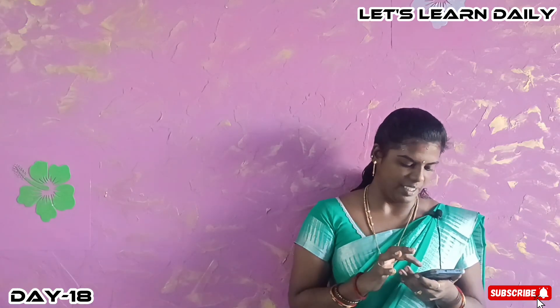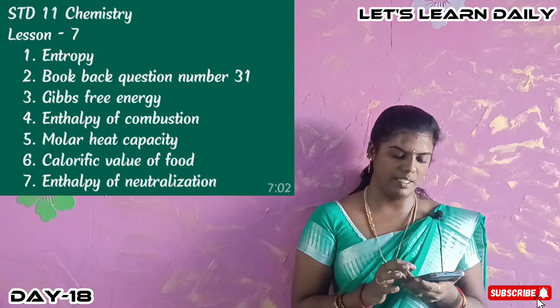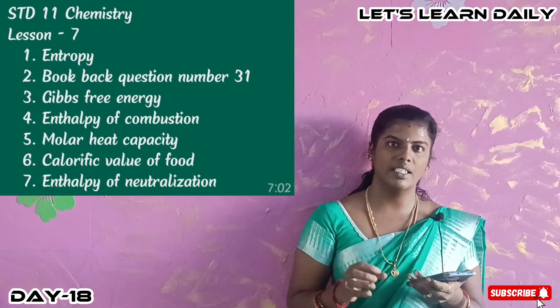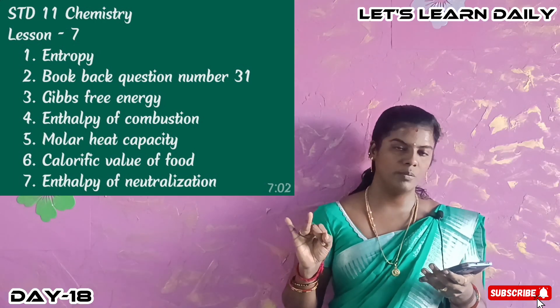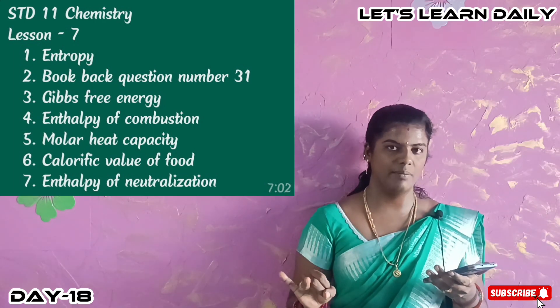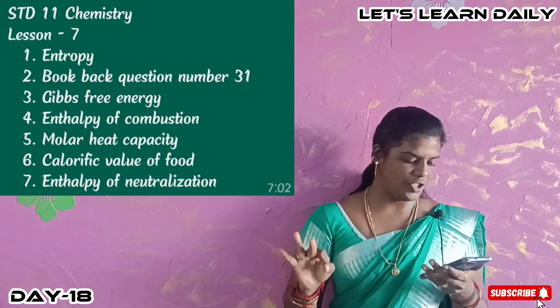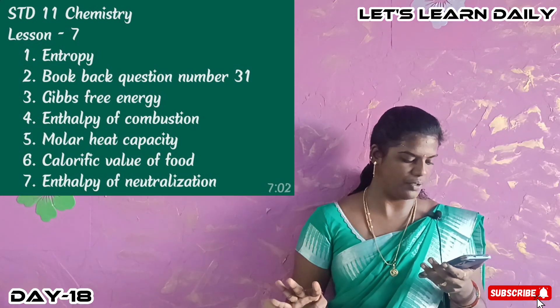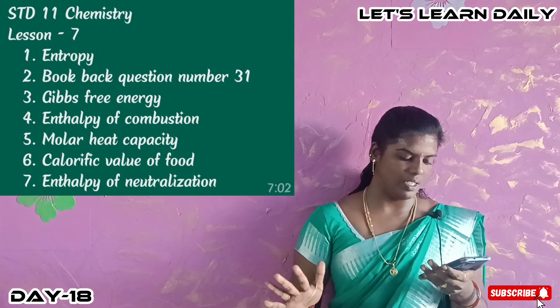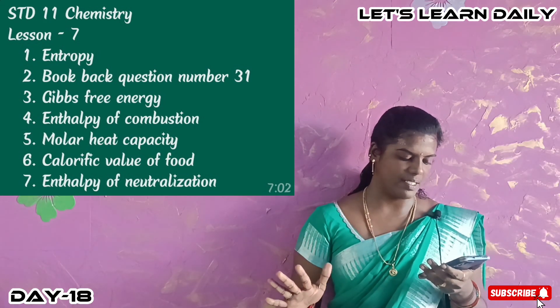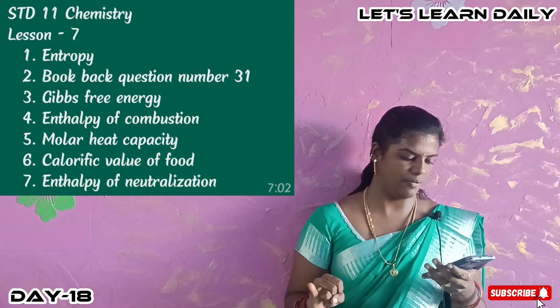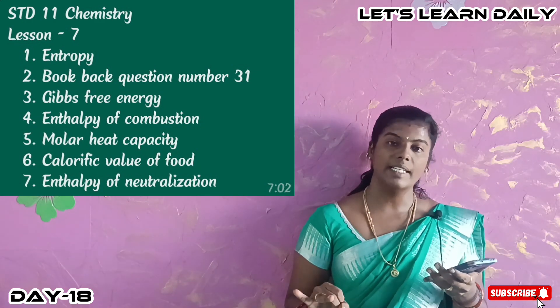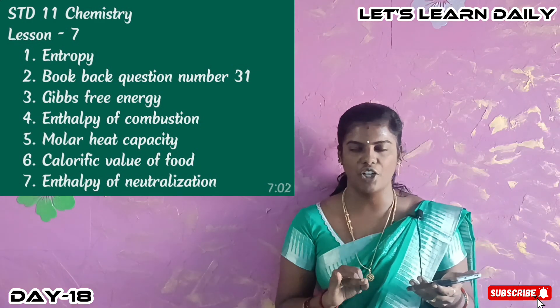Next is 11th chemistry, lesson 7: entropy — bookback question number 31, Gibbs free energy, enthalpy of combustion, molar heat capacity, calorific value of food, and enthalpy of neutralization. These are short answer questions.